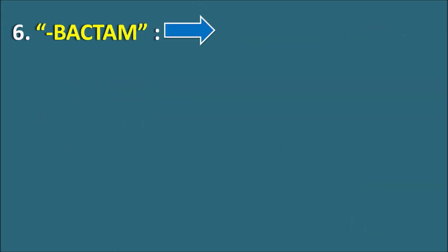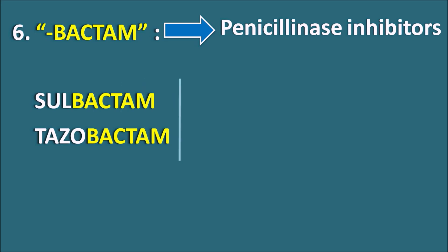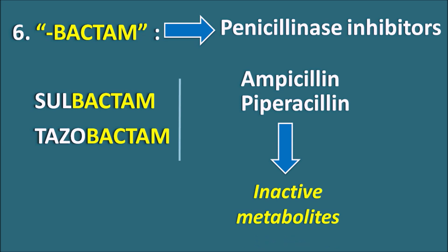Sixth one is the suffix -bactam. This indicates they are penicillinase inhibitors. We have drugs like sulbactam and tazobactam, which are type 2 penicillinase inhibitors. Type 1 is clavulanic acid. These drugs alone are not effective as antibacterials but are combined with penicillin antibiotics like ampicillin and piperacillin, because those penicillins are inactivated by penicillinase enzymes with beta-lactamase activity that cleave the beta-lactam ring. Sulbactam and tazobactam inhibit the penicillinase enzyme, protecting the penicillin. Classic combinations include ampicillin plus sulbactam and piperacillin plus tazobactam, increasing clinical efficacy.